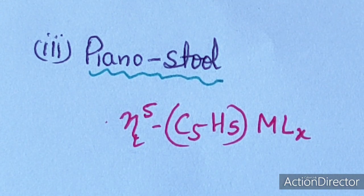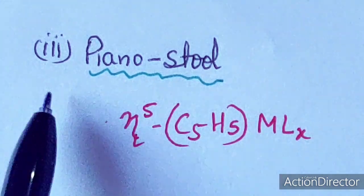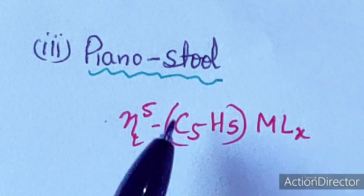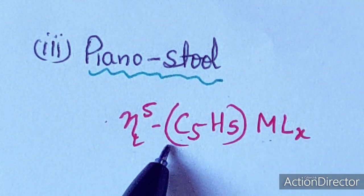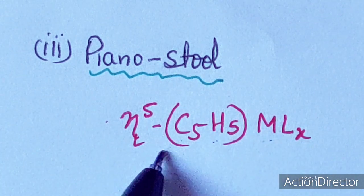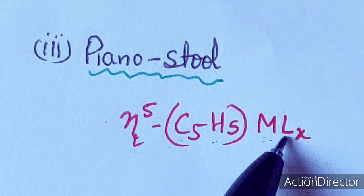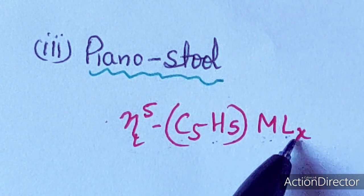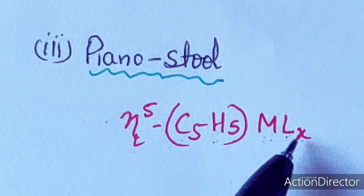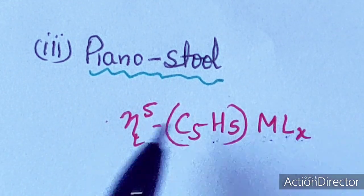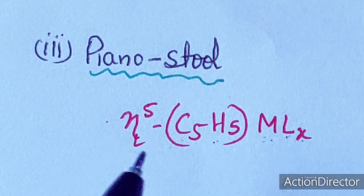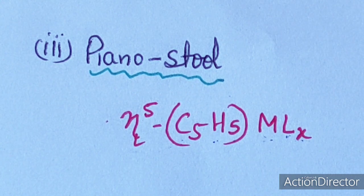The third type of metallocene is piano stool type. In this type, there is only one cyclopentadienyl anion, and there may be other ligands up to X in number attached to the metal center.